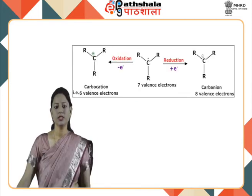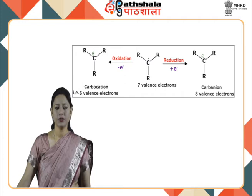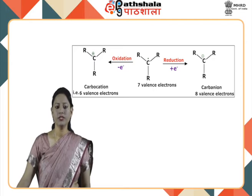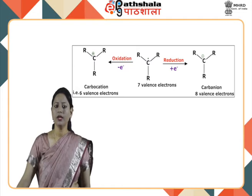The valence electrons in a free radical are 7, whereas the positively charged carbon of a carbocation has 6 valence electrons. The negatively charged carbon of a carbanion has 8 valence electrons. So this radical differs from carbocations and the carbanion, having 7 electrons on the carbon-bearing radical.